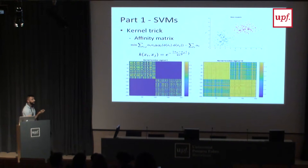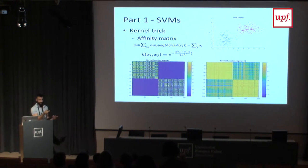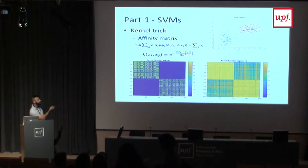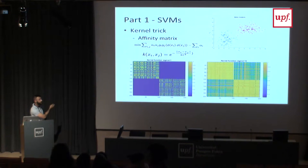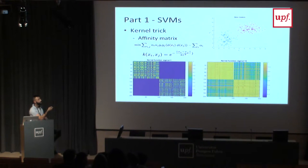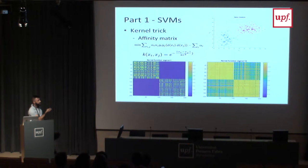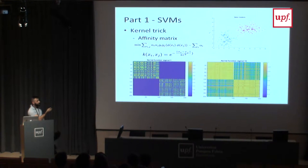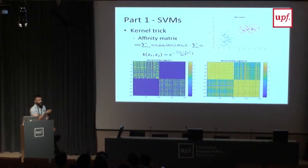In cases where the data is not linearly separable, as in the previous slide, we use a mathematical tool called the kernel function. What it does is change the minimizing function, applying it in a higher order of dimensions. As a simple example, we use the Gaussian function on a dummy example with two clusters of data, and calculated the covariance matrix of these two datasets. The covariance matrix shows how each data point is related to the others.